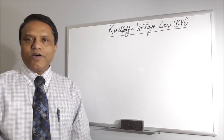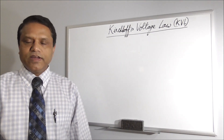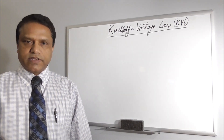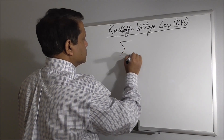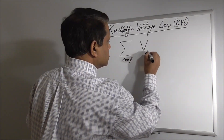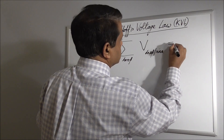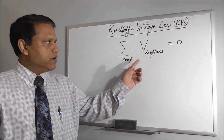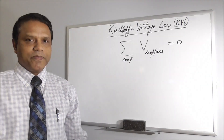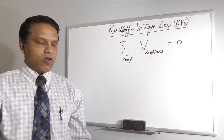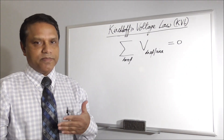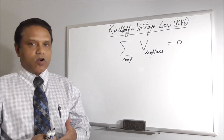This is called Kirchhoff's Voltage Law, in short KVL. According to this law, the sum of voltage drops and rises around a closed path or circuit is zero. Around the closed loop, the sum of all voltage drops and rises equals zero. You have to remember one thing: in writing this equation you have to consider either the drop or the rise as positive. If you consider the drop as positive then rise will be negative, or if you consider the rise as positive then the drop will be negative.